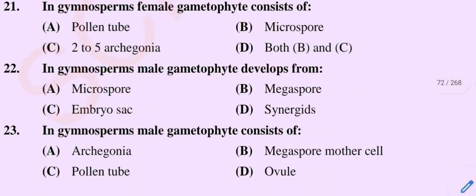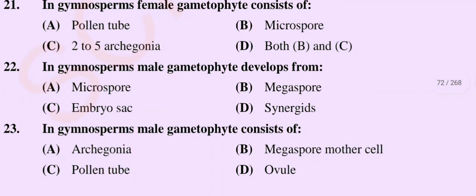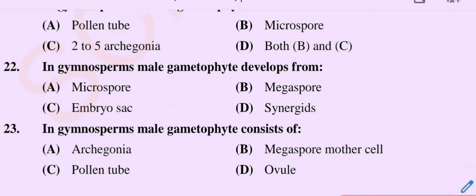Question number 22. In gymnosperms, the male gametophyte develops from. Option A: Microspore. Option B: Megaspore. Option C: Embryo sac. Option D: Synergids.